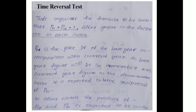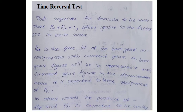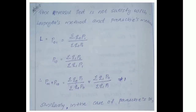In other words, P01 is the reciprocal of P10. The product of P10 and P01 is expected to equal unity. The time reversal test is not satisfied by Laspeyre's method and Paasche's method.